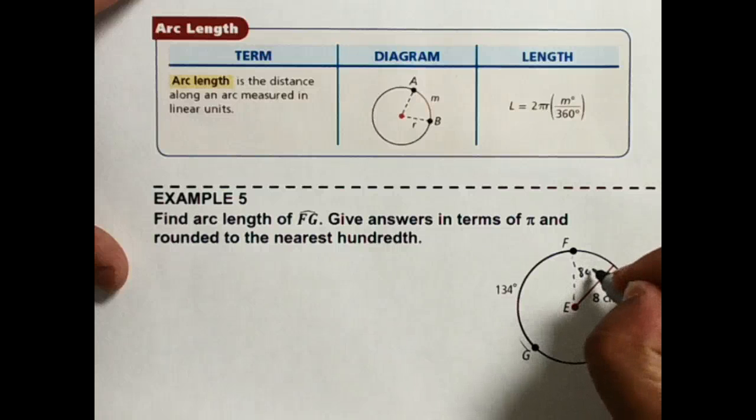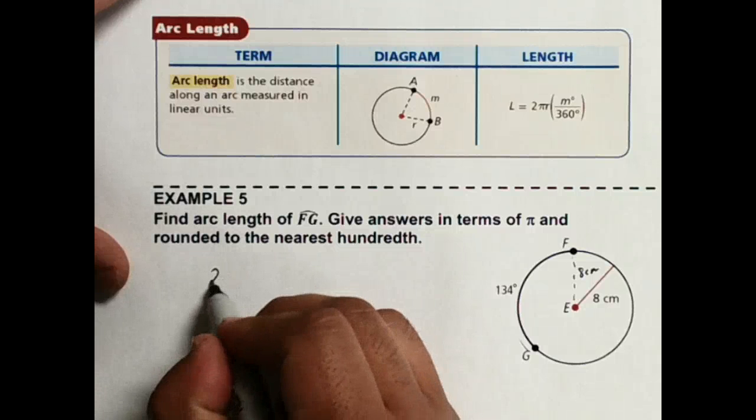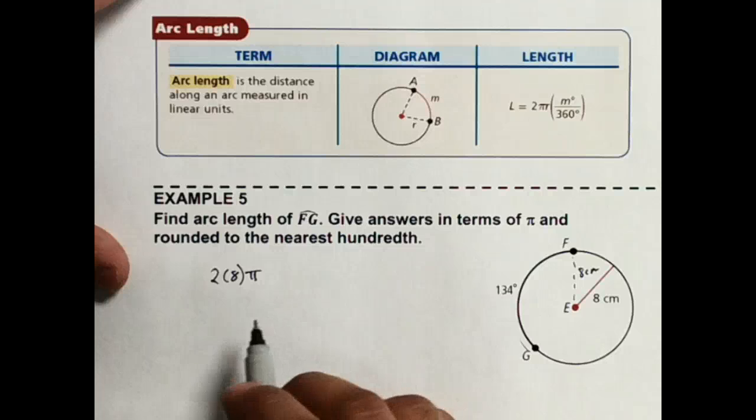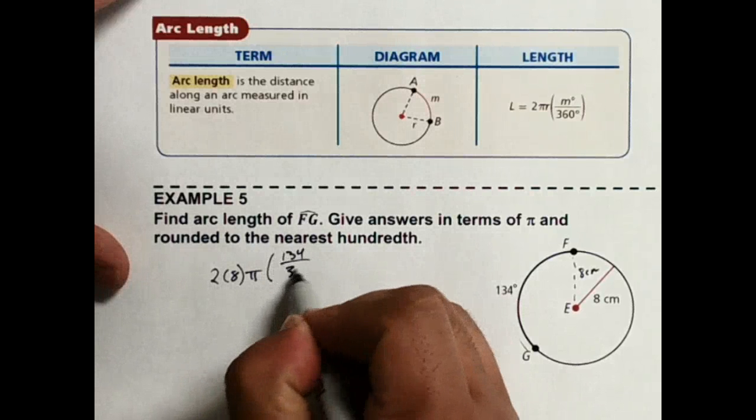So it's going to be 2 times 8 pi for my circumference. Then my angle is going to be 134 over 360.